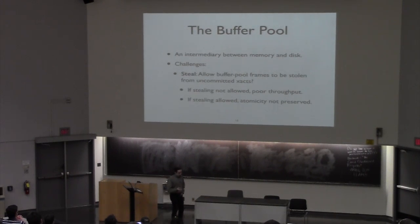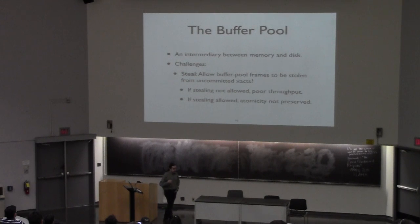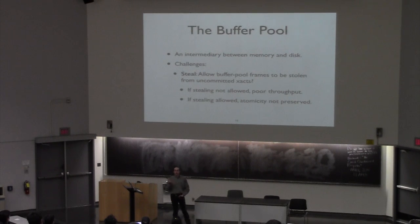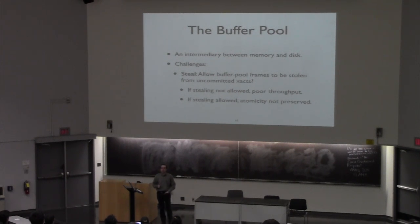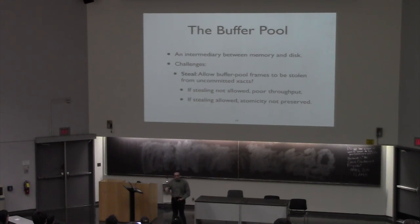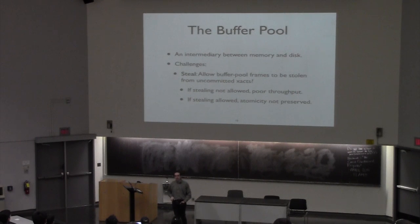The other design decision that goes into a buffer pool is whether we allow other transactions to come in and steal a buffer page. In virtual memory, you can think of this as: do we allow page outs? So if a transaction hasn't been committed yet, do we allow that transaction to have its memory pages stolen from it and reallocated to a different transaction? Why might not allowing stealing impact the throughput of the system?